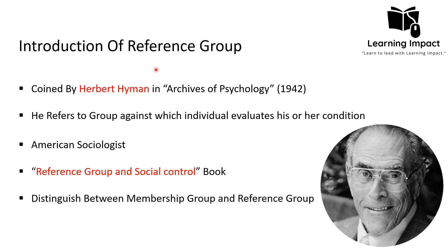The term 'reference group' was coined for the first time by Herbert Hyman in his work 'Archives of Psychology,' published in 1942. In this work, he referred to the reference group as a group against which an individual evaluates his or her condition — a group individuals use for comparison of their own capabilities by relating themselves to it.